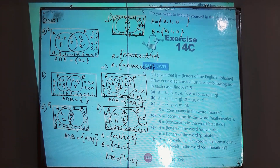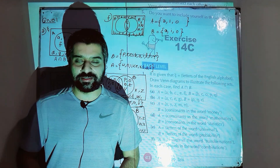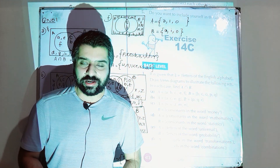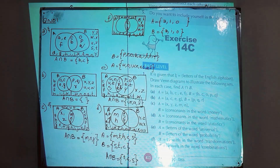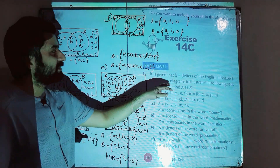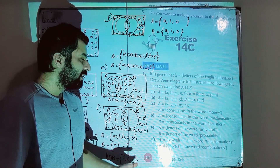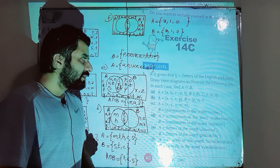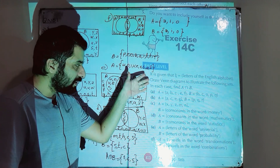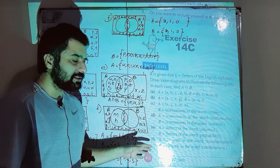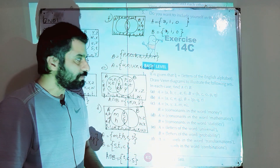Hello everyone, in this lesson I am going to start Exercise 14C of D, 7th edition. I hope all of you are fine. We are going to discuss Venn diagrams today. This exercise is related to Venn diagrams. Question number one: it is given that we have a universal set that is the letters of the English alphabet. Draw Venn diagrams to illustrate the following sets, and in each case we are going to find A intersection B as well.